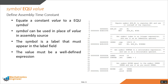In an assembly language program we usually define constants used throughout the program. For that we use the EQU (equate) directive, which equates a constant value to a symbol that can be used in place of its value in the assembly program. The symbol is a label that must appear in the label field. For example, 'index' is the symbol defined in the first column, replaced by its constant value. The value used in this directive must be a well-defined expression.